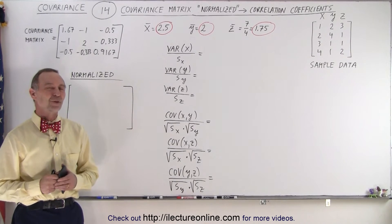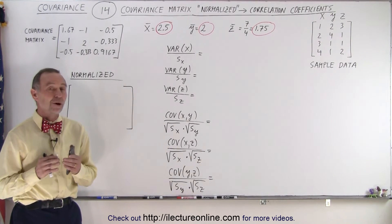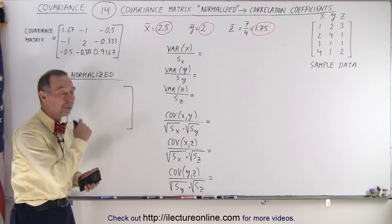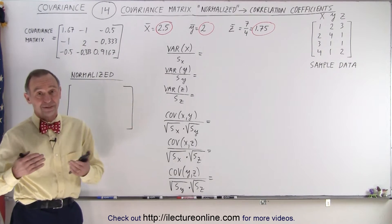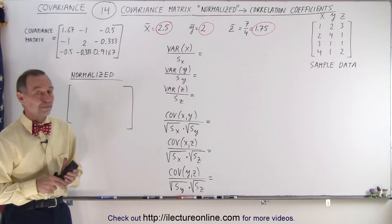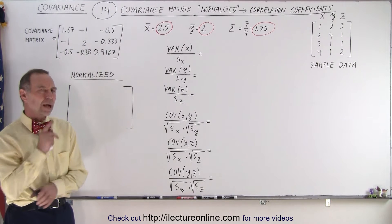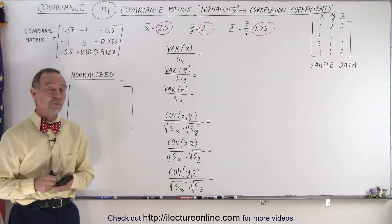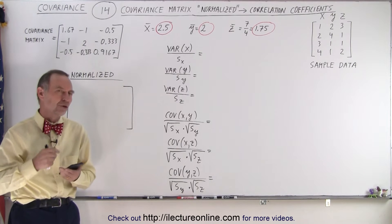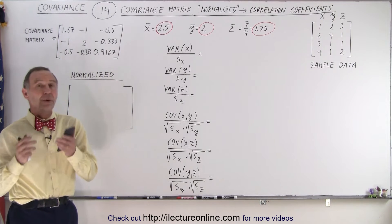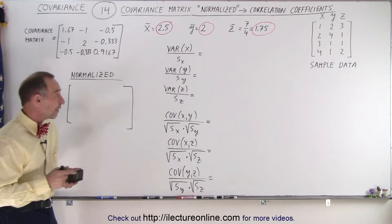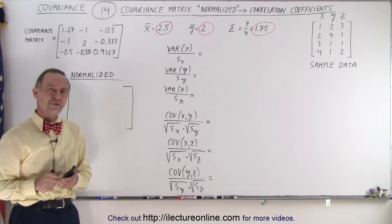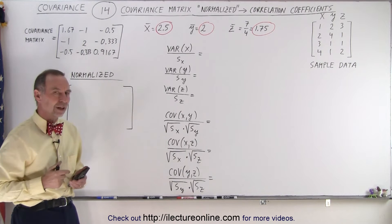Welcome to Y Lecter Online. In the previous video, we ended up with a covariance matrix derived from sample data sets in X, Y, and Z. Now what we're going to do is normalize that covariance matrix — we're going to find the correlation coefficients. We've already learned how to find the correlation coefficients for the covariance, but what about the correlation coefficients for the variance itself?